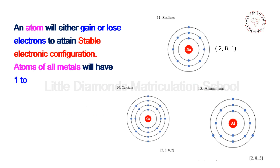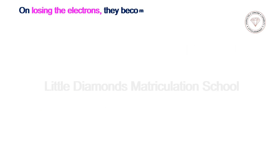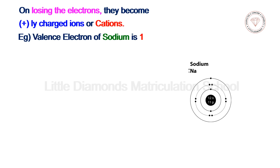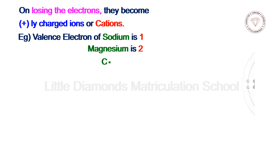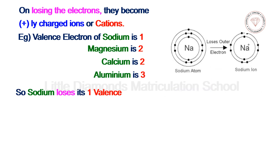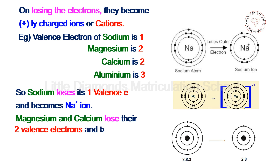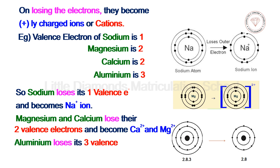Atoms of all metals have one to three valence electrons, so they tend to attain stable electronic configuration by losing electrons in a chemical reaction. On losing electrons, they become positively charged ions, or cations. For example, sodium has 1 valence electron and loses it to become Na⁺. Magnesium and calcium each have 2 valence electrons and become Ca²⁺ and Mg²⁺ ions. Aluminium has 3 valence electrons and loses them to become Al³⁺ ion.